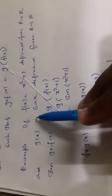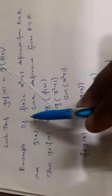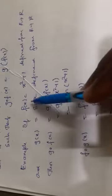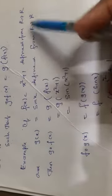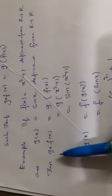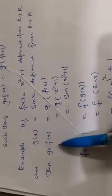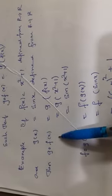I will explain by taking these examples. If f of x equals x squared plus one, defined from R to R, and g of x equals sin x, defined from R to R, then let us find g composite f of x.